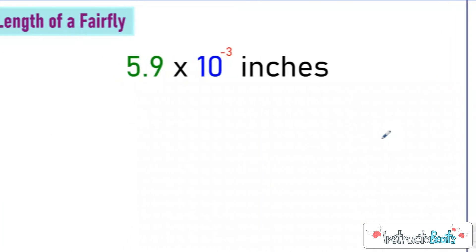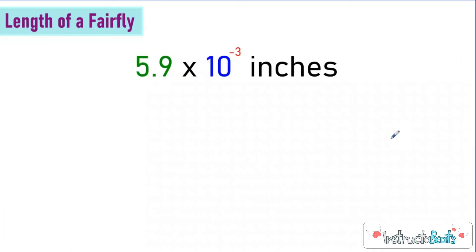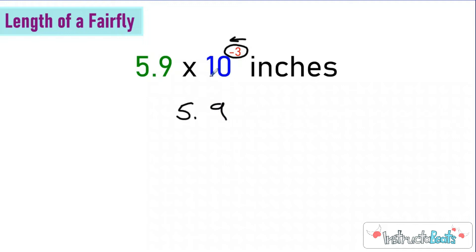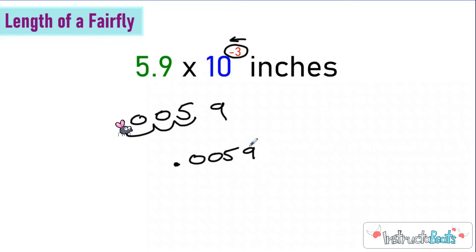Here is the length of a firefly. There is a firefly that is 5.9 times 10 to the negative three inches. I know that's got to be really small because I'm about to multiply really by one one-thousandth — that's what this part of my scientific notation is telling me. But let's just use the shortcut. Because it's a negative exponent, we're going to be moving it left three place values. So I write 5.9, multiplying by 10 to the negative third power, and move it one, two, three places to the left.